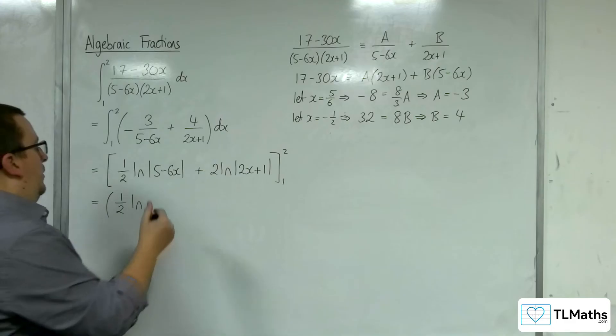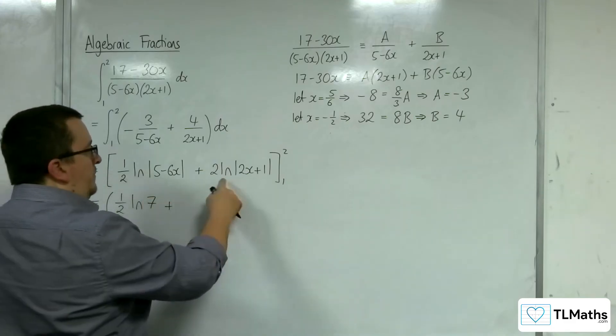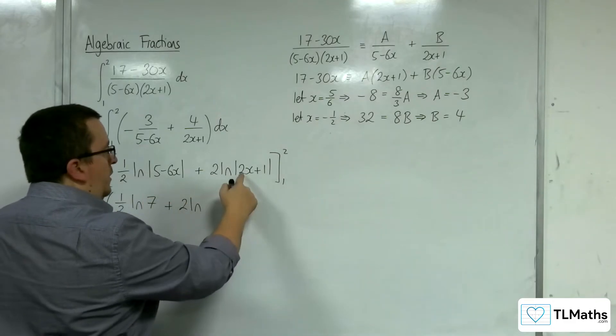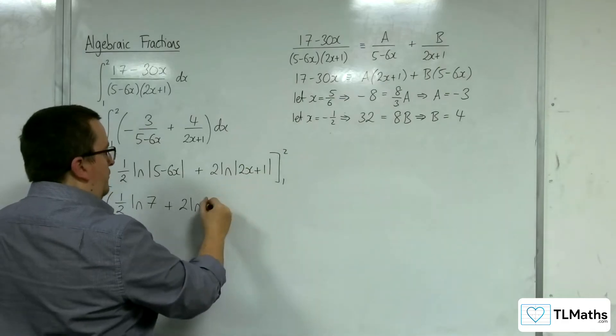Modded, so positive 7. Plus, 2 log, 2 lots of 2 plus 1, so 5.